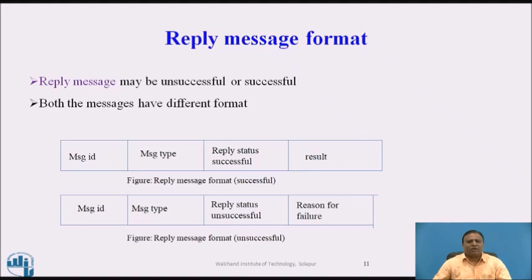Reply Message: A reply message may be successful or unsuccessful, and both have different formats. The reply message consists of fields: message ID, message type, reply status, and result. The message ID is the same as that of the call message. The message type field is set to indicate a reply message. For a successful reply, the reply status field is set to zero. For an unsuccessful reply, the reply status field is set to one or a non-zero value to indicate failure.